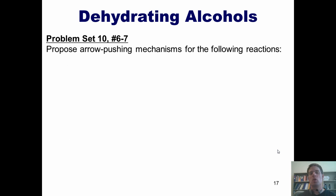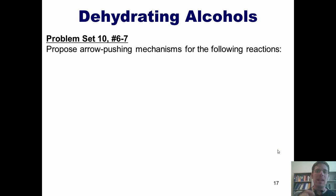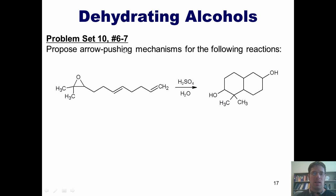This brings us to two really challenging problems that I assign my students on this problem set that I absolutely love. I'm not going to show you the answers on this video — I will work through them for my students in class and later post a video. I want you to propose arrow-pushing mechanisms for the following reactions. One involves protonating this oxygen and then having one of these double bonds swing its electrons into one of these carbons — see if you can figure out how that proceeds.